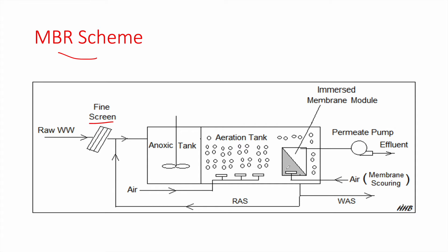Within the aeration tank we have immersed membrane modules — the MBR membranes — where we have the massive reduction of organic matter, BOD and COD. This is also where ammonia is transformed into nitrates through nitrification. Some sludge, called returned activated sludge, is then pumped back into the anoxic tank to remove the nitrate through denitrification, transforming it into nitrogen gas.